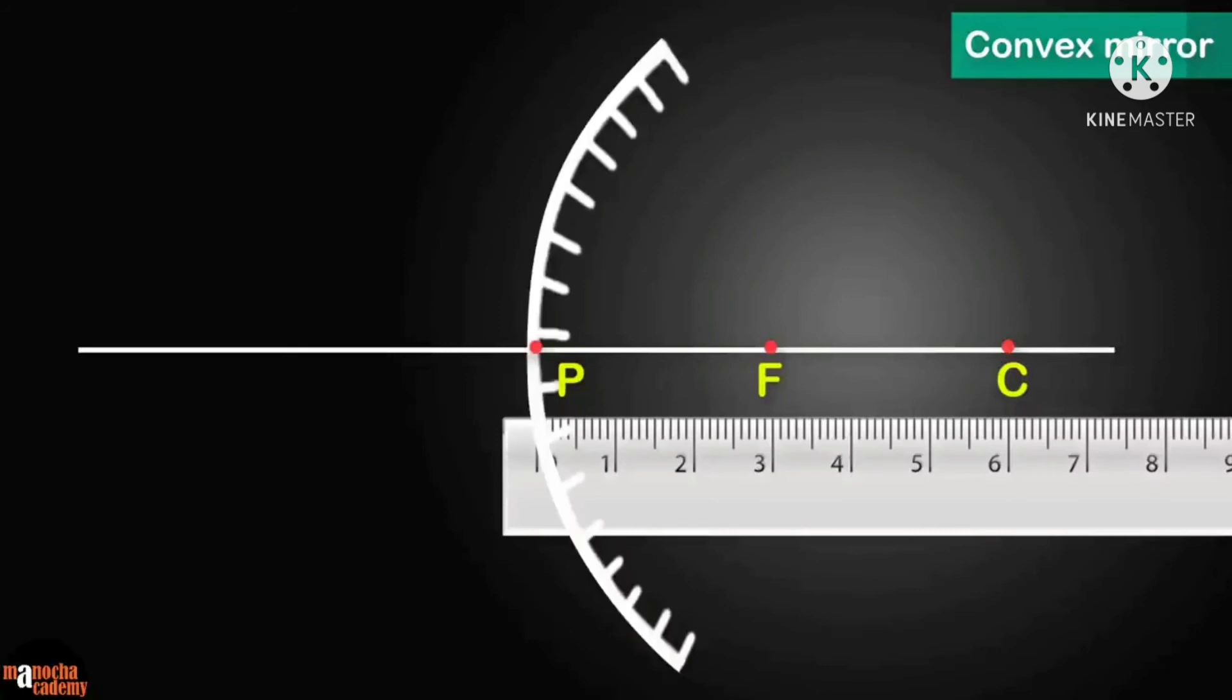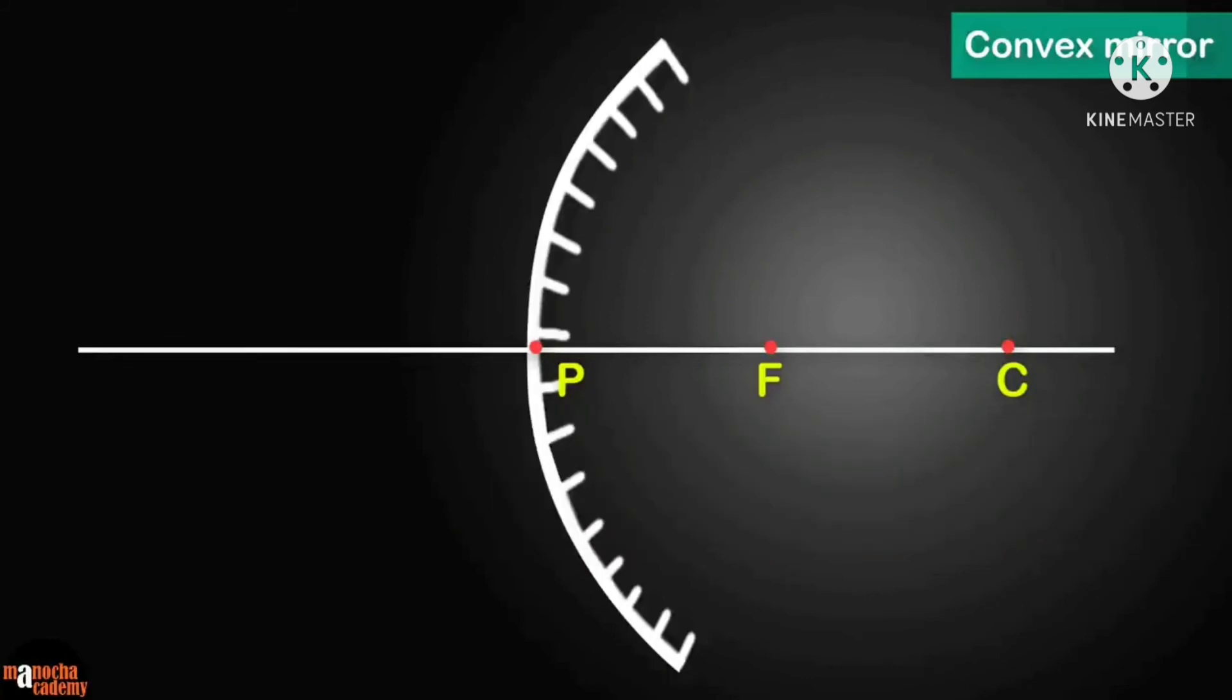Draw a line representing the principal axis using a ruler. Mark three points where P is at 0 cm, F is at 3 cm, and C is at 6 cm. You can take any convenient distance as long as F is exactly in the middle between P and C.